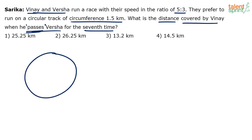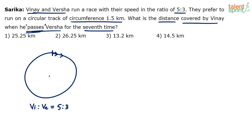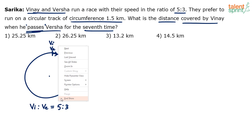Let's simplify this. This is the circle — the circumference is 1.5 kilometers. Let's say this is the starting point, and both are running in the clockwise direction. Since Vinay's speed to Varsha's speed is 5:3, Vinay will be faster than Varsha. The moment they start running, Vinay will take a pole position and get ahead of Varsha.